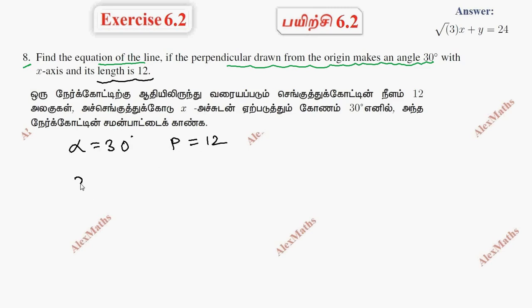This is direct substitution using the normal formula. The equation of the line in the normal form is x cos alpha plus y sin alpha equals P. So it is x cos 30 plus y sin 30 equals P is 12.